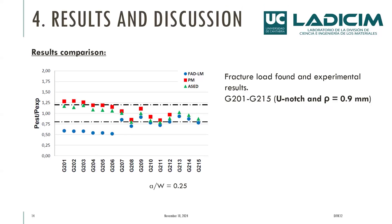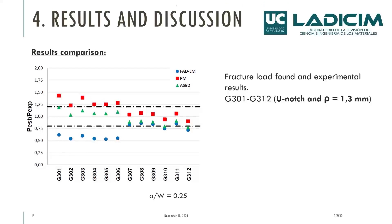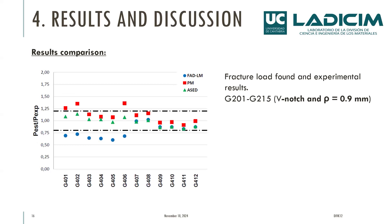Comparing the three methodologies, we can see that all of them give a good approximation around the experimental loads. For U-notches with a radius of 0.19 millimeters, we observe a wider scatter when the width-to-radius ratio is large. For notches with a value of 1.3 millimeters, we have a very close fitting from the beginning. Finally, the ratio between experimental and predicted loads is evaluated for all notch types and configurations.